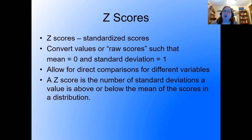If you're two below the mean, your z-score is negative two. Z-scores are either positive or negative: if you're above the mean it's positive, if you're below the mean it's negative, and the number tells you how much above or below you are.